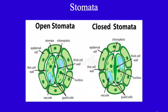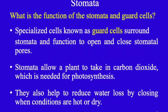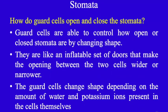The stomata open and close, with guard cells around them and other epidermal cells surrounding those guard cells. The function of stomata and guard cells: specialized cells known as guard cells surround stomata and function to open and close stomatal pores. Stomata allow a plant to take in carbon dioxide needed for photosynthesis, and also help reduce water loss by closing when conditions are hot or dry. Guard cells control how open or closed stomata are by changing shape — like an inflatable set of doors — depending on the amount of water and potassium ions present in the cells.